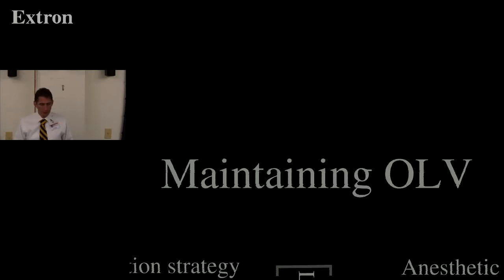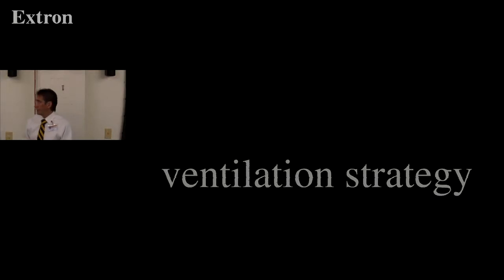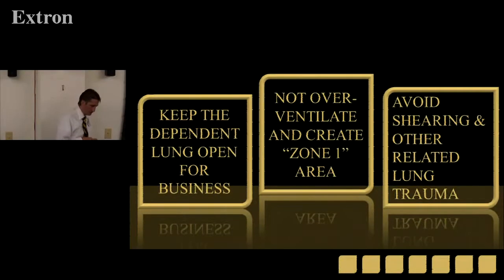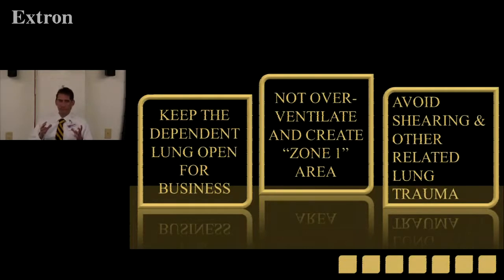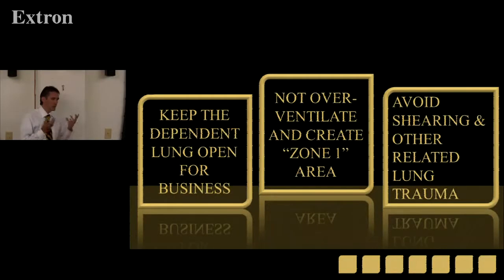Once we've decided on the tube, placed it, and confirmed it's working, let's talk about maintaining one-lung ventilation. The old thinking was more volume is better — keep the lungs wide open to avoid atelectasis. More recently, physiology research has told us that's not good. Lungs don't like being stretched out. We used to worry just about barotrauma, but now we recognize there's also volutrauma — excess stretch of the alveoli causes exudate and cytokine infiltration, causing all sorts of badness.